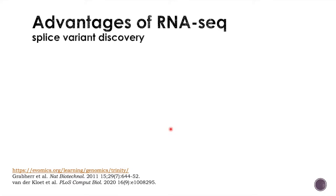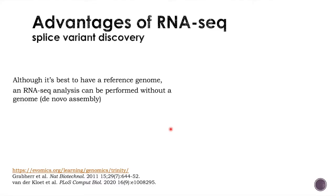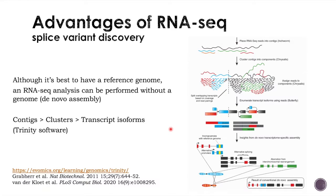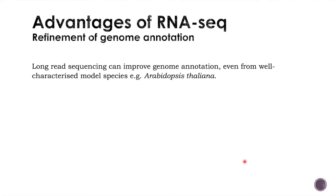RNA-seq also has a big advantage in that you don't necessarily need a reference genome — you can perform an RNA-seq analysis without a genome through what is called de novo gene assembly. For instance, you can use software called Trinity, which assembles RNA-seq reads into contigs, clusters, and transcripts. Trinity starts with RNA-seq reads, puts them into contigs in a process called Inchworm, clusters these contigs into components, then assembles reads into transcript isoforms — useful for detecting alternative splicing.